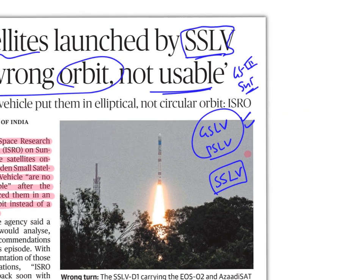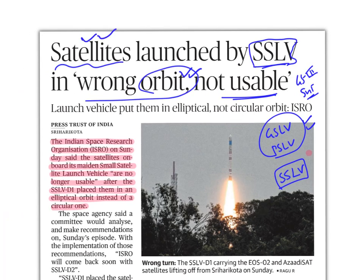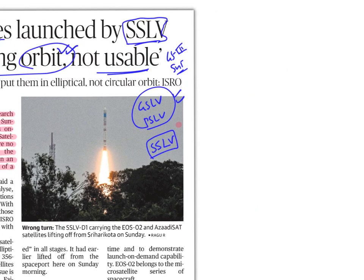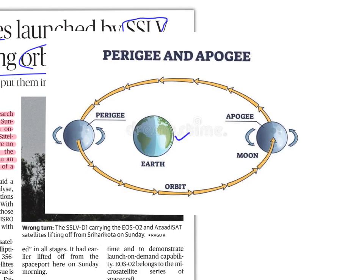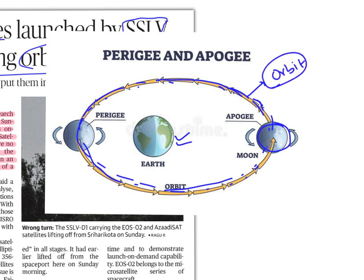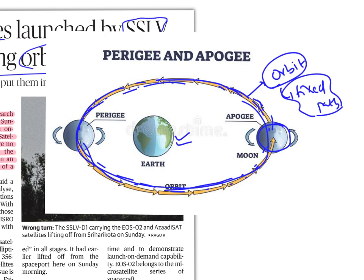Before we get into the news, let's understand the concept of orbit and satellites. In this image you can see Earth, and the Moon is moving around Earth in an elliptical manner. The path taken by the Moon to move around Earth is called orbit — a fixed path taken by one object to move around another object in space.